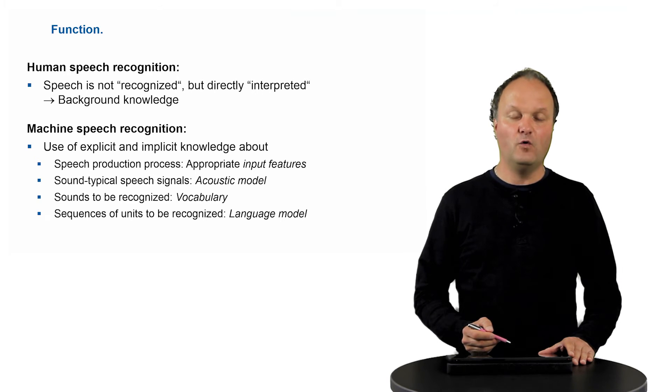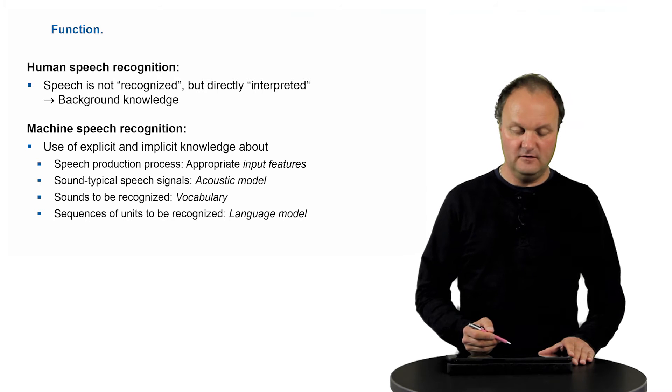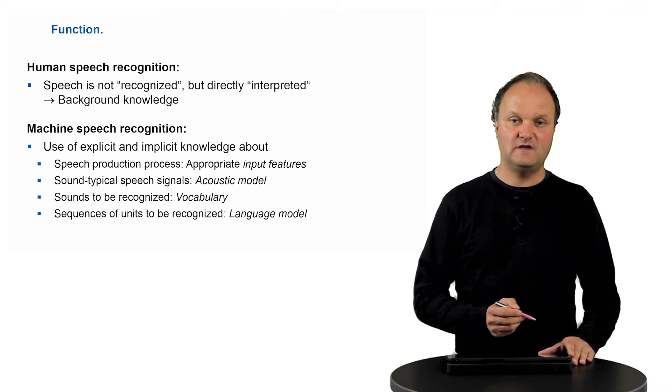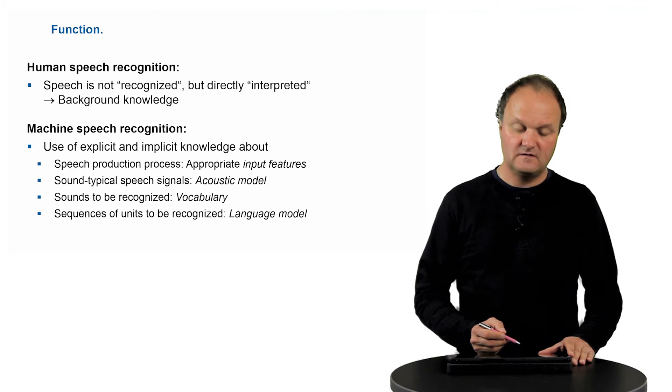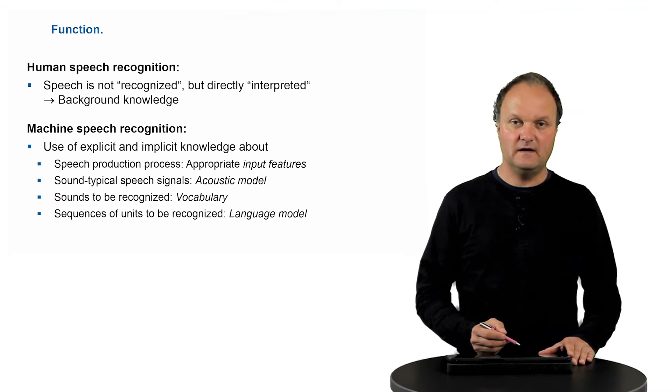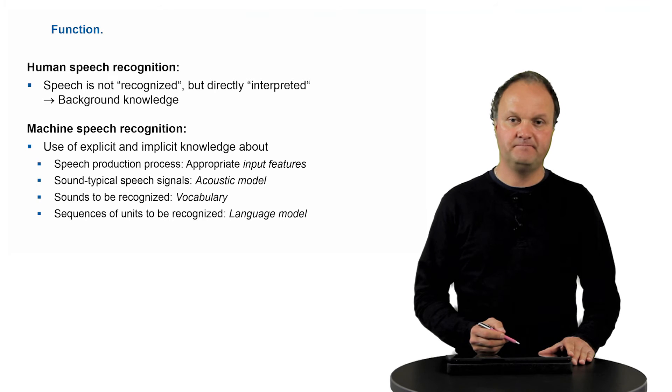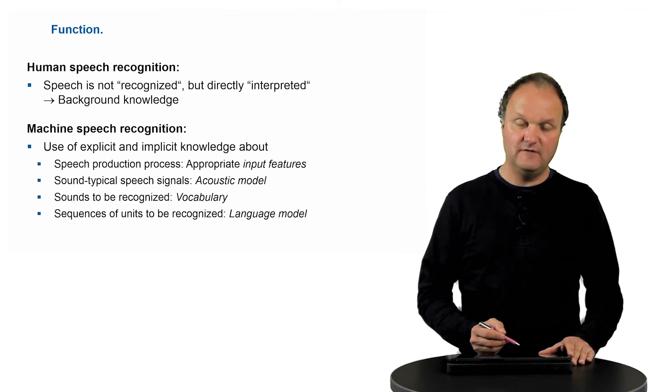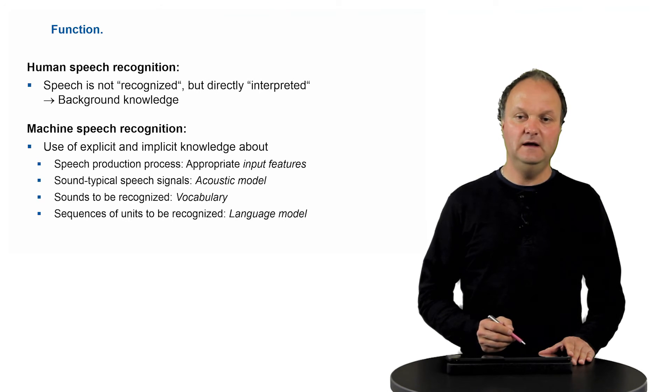We also need to teach the computer how a speech signal, which is typical for a sound or a class of sounds, the phonemes, looks like, and this is done in the so-called acoustic model. We also need to tell the recognizer which sounds are allowed in a particular language, that is, we have to teach him the vocabulary and pronunciation dictionary of how individual words are pronounced. And finally, we have to teach the recognizer also how individual words may follow each other in a particular language, that is, we have to give him a language model or grammar. All this is explicit information which we need to put into the recognizer.